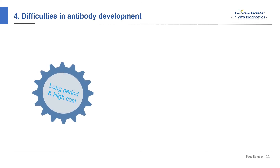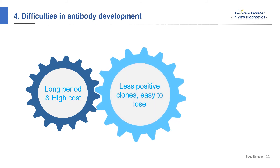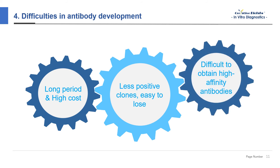Although antibody development techniques are mature, there are still some difficulties in the development process. Firstly, the antibody development cycle is long and the cost is high. Secondly, the positive results screened are few and are easily lost. In addition, although the specificity of the developed antibodies has been experimentally verified, there are still some antibodies that cannot effectively activate the complement and Fc receptor effector systems in the human body, and are often eliminated by the human circulatory system.